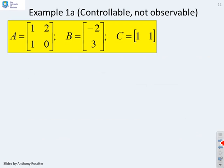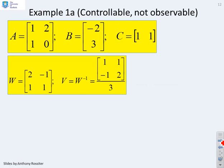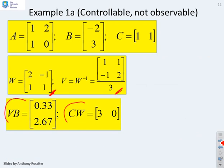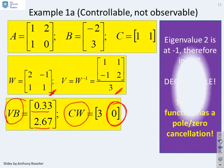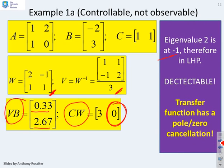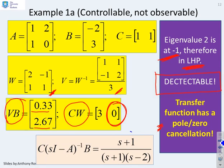First example: a system that is controllable but not observable. Performing the eigenvalue eigenvector decomposition, we compute VB and CW. VB is full, so the system is fully controllable. But CW has zeros in the second column, so there is an unobservable mode. The corresponding eigenvalue for this mode is at minus one, which is in the left half plane — therefore the system is detectable. Note that the transfer function has a pole-zero cancellation: S plus one appears in both numerator and denominator.